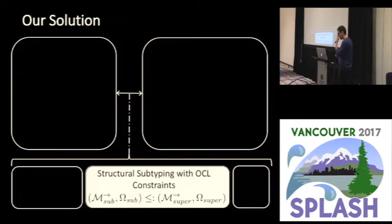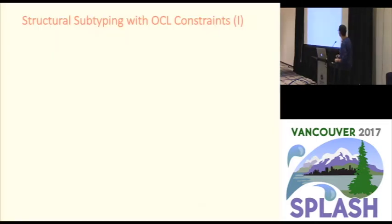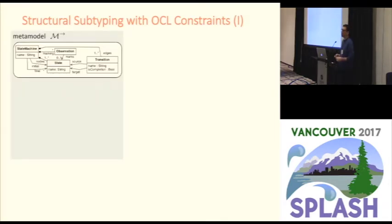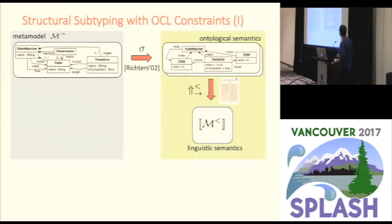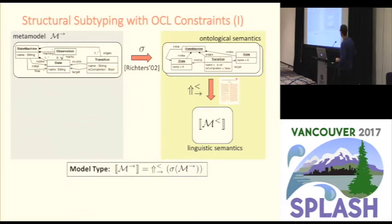Now we are able to check if a model type expression defines a subtype of another. We are going to augment model type expressions with OCL constraints, reusing the semantics described by Rister and Martin Gogola in Rister's thesis for metamodels described as class diagrams. The semantics is the set of abstract syntax graphs that can be defined with that metamodel.